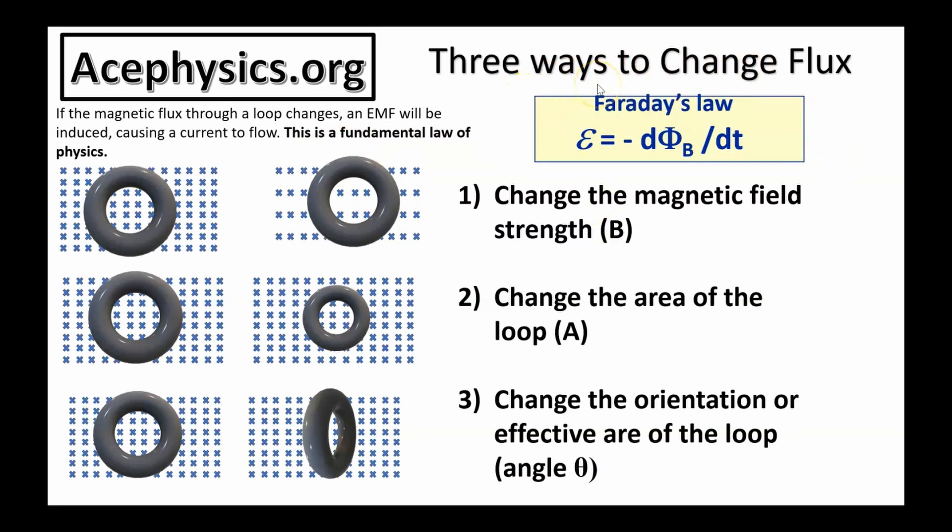There are three ways to change flux through a closed loop. You can change the strength of the magnetic field. Second, you can change the area of the loop. And third, you can change the angle between the field and the loop.